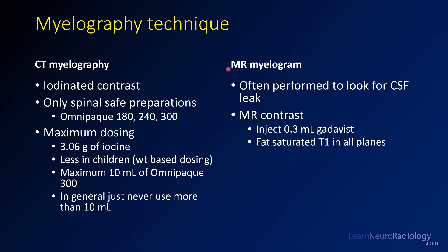MR myelograms are specialized versions of myelograms most often done to look for CSF leaks. In those cases you can inject an MR contrast agent. MagnaVist is the one that's been most described, but at many places they've started to use Gadavist. You want to inject between 0.1 and 0.3 milliliters of the contrast agent diluted in sterile saline or CT contrast, and then you'll do fat-saturated T1 imaging in all planes to look for CSF leak.